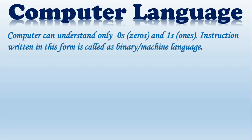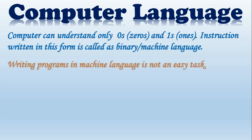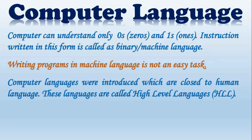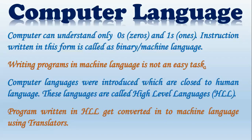Let us see how the computer understands these languages. A computer can understand only zeros and ones. Instructions written in this form are called binary or machine language. So the computer doesn't directly understand whatever we write in high level languages — it must be converted into zeros and ones. Computer languages that are closer to human language were introduced for this purpose, and these are called high level languages. Programs written in high level languages get converted into machine language using translators.